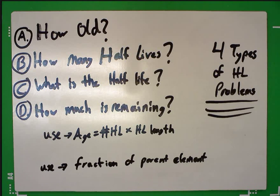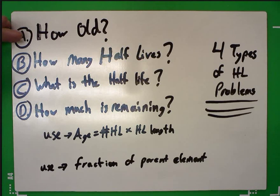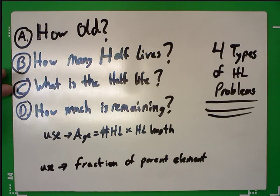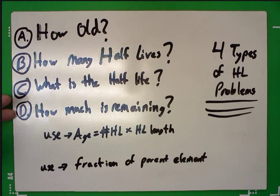Here I have written down the four main types of half-life problems. A is how old is the sample — maybe it's a fossil. B is how many half-lives have passed. C is what is the half-life — how long is the half-life. And D is how much of your parent element is remaining. Those are the four types of problems.